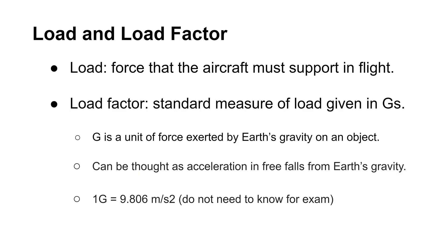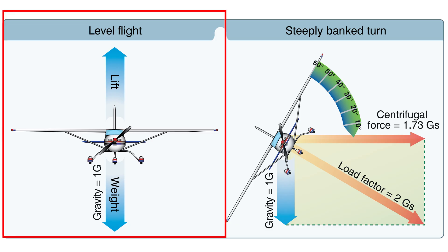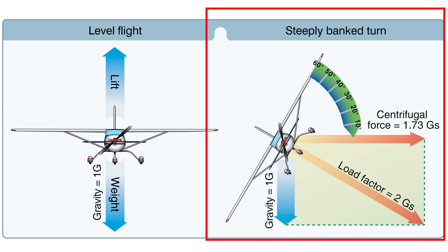In aerodynamics, load is the force that the aircraft must support in flight. Load factor is the standard measure in aviation given in Gs. A G is a unit of force exerted by earth gravity on a resting object. This same force will also apply to objects that are accelerating or braking. In a straight-level flight, an aircraft must support a load equal to its weight, which is equal to 1G. But if the aircraft deviates from the straight-line flight, the load factor increases above 1G. Such actions create stress on the aircraft's structure.